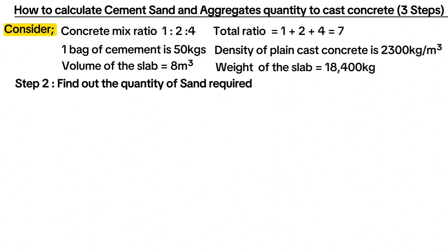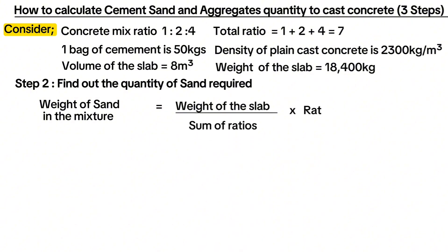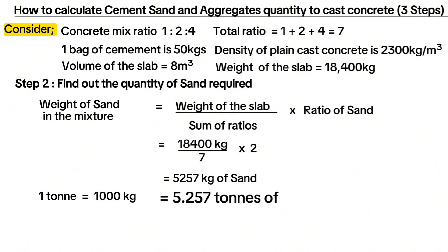Step two is to find out the quantity of sand required. The weight of sand in the mixture is equal to the total weight for the whole slab divided by the sum of ratios, multiplied by the ratio of sand. This equals 5,257 kilograms of sand.